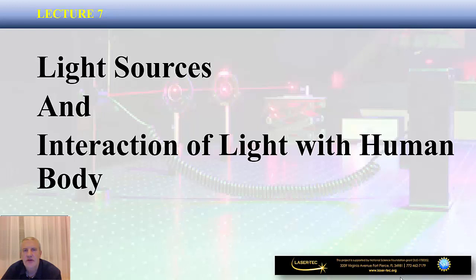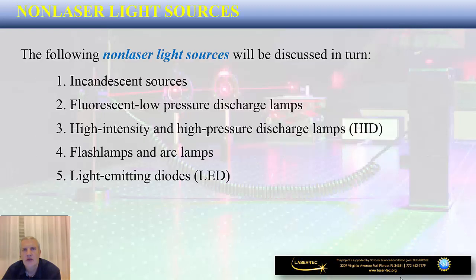Hi and welcome to lecture number 7 of our introduction to photonics video series. Today's topic is going to be light sources and we are also going to describe the anatomy of the human eye. Light sources can be defined as the sources that produce or emit light. We have natural light sources and man-made light sources. Man-made light sources can be further broken down into non-laser light sources and laser light sources. This lecture is going to cover the subsection of non-laser light sources.